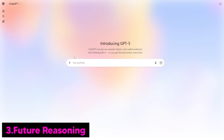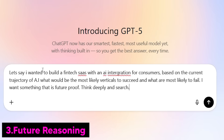Remember how in this video I talk about the fact that I'm working on a business? I can ask it questions and ask it to reason through the most likely scenarios based on all the current available information. I said: 'Let's say I wanted to build a fintech SaaS with an AI integration for consumers. Based on the current trajectory of AI, what would be the most likely verticals to succeed and what are most likely to fail? I want something that is future proof. Think deeply and search.' Remember with your prompts — always add what you want it to do. If you want it to genuinely think deeply, make sure you add this. And if you want it to search, I've noted that GPT-5 will often just answer you off the bat, so always add the search function because it can still hallucinate some small part of the time.